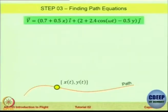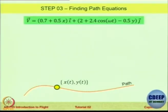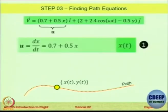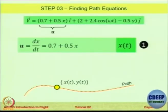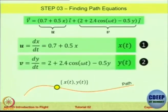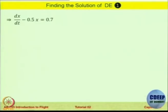This is the velocity equation. The particle takes a path and the velocity is a function of x and y, which are functions of time. U is dx by dt equal to 0.7 plus 0.5 x, and V is the other component involving y. We have a differential equation: dx by dt minus 0.5 x equal to 0.7. How do you solve this equation?